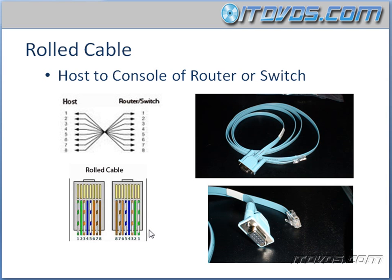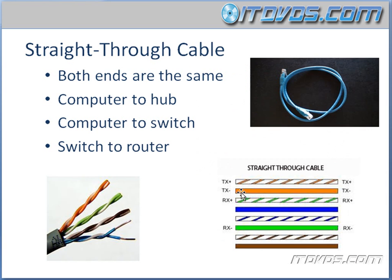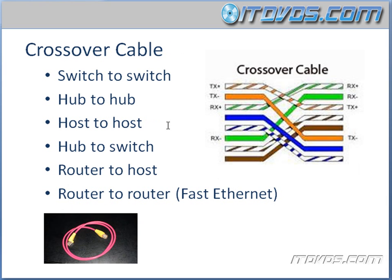Now let's talk about how to remember these. The rolled cable is easy — the ends are just opposites of each other. Straight-through is easy too — both ends are the same. The only other UTP wiring type is the crossover — if both ends aren't the same and they're not complete opposites, you've got a crossover cable. Straight-through is for normal connections, crossover is for connecting like devices, and a rolled cable is to console in to a router or switch.